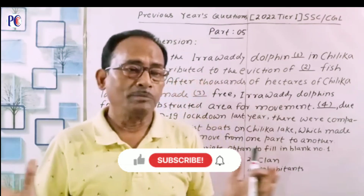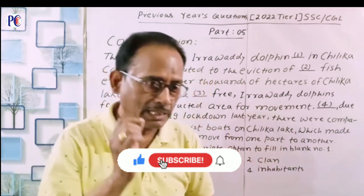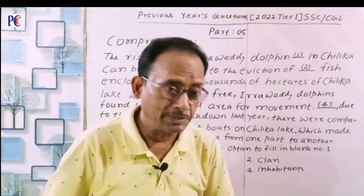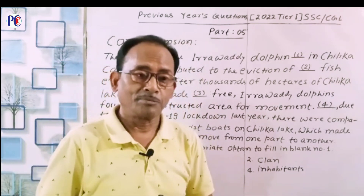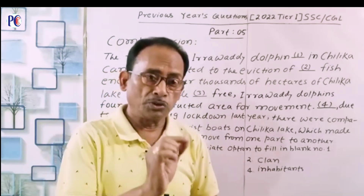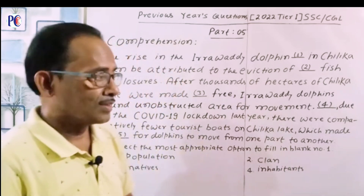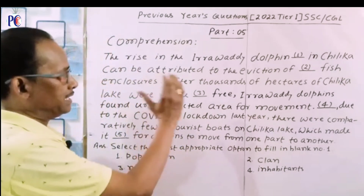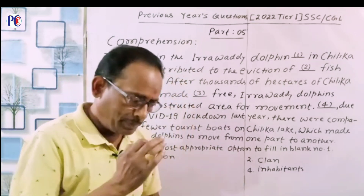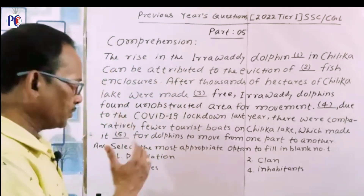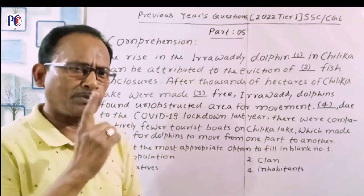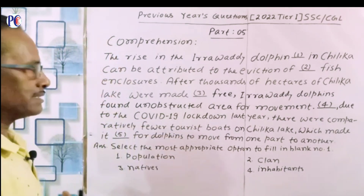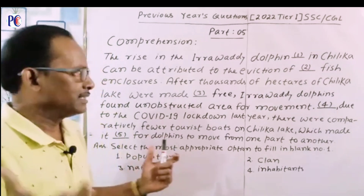Hello everyone, welcome to my channel. Students, today is the last part of the preparation for CGL 2023 based on the discussion of previous year 2022 questions. We have a passage for comprehension containing five blank spaces. Each blank space is given four options. You have to select one of the four options to fill in the respective blank space. Let us start to read the comprehension passage.